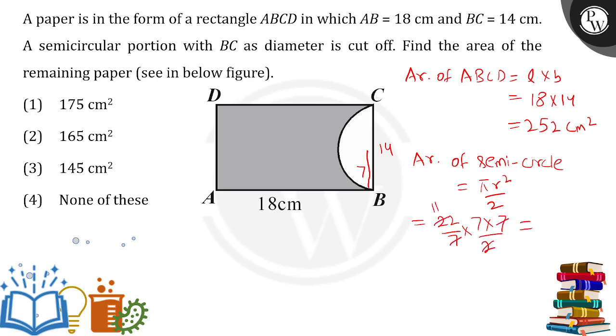So required area, required area will be what? The total area of 252 minus the area of the semicircle, that is simply 77. So 252 minus 77 will be 175 centimeter square as our final answer, which is option number 8.